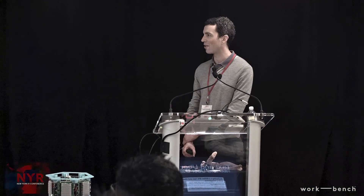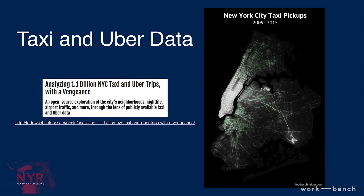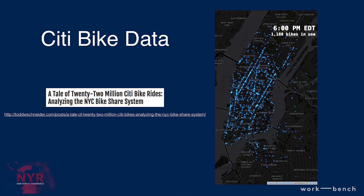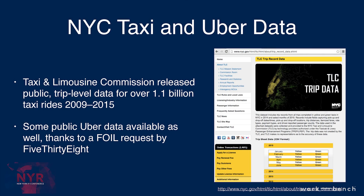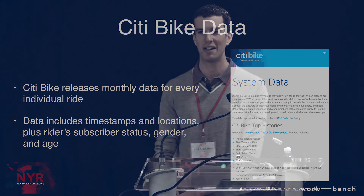The taxi and Uber data blog post is something I wrote in November, using over a billion taxi trips and Uber trips from the past six years. I then followed that up a few months later with a city bike post. The city bike post had the fun element of a little animation where each of those little blue dots is a city bike running around the city over the course of a day. Where does this data come from? In the case of taxi and Uber data, the TLC posted a giant dataset of basically over a billion trips on their website. Every trip has latitude and longitude coordinates for pick-up and drop-off, and timestamps for when it happened. There's also similar data available from Uber, thanks to a Freedom of Information request. City bike data is posted on their website every month — every trip, similar style data: latitude, longitude, timestamps.